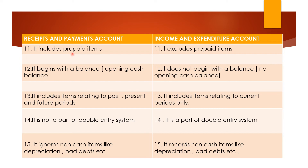Receipt and payment account includes prepaid items — they will be recorded there. But income and expenditure account will not record prepaid items; they are excluded. Receipt and payment account usually begins with the opening cash balance, because it is just like a cash book. Income and expenditure account will not begin with any balance — there will be no opening cash balance at all.